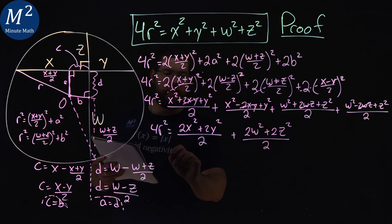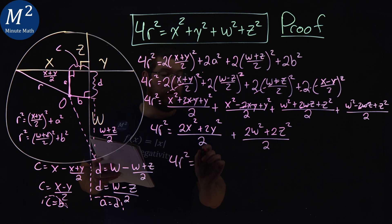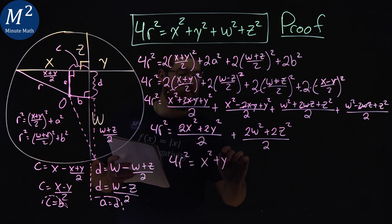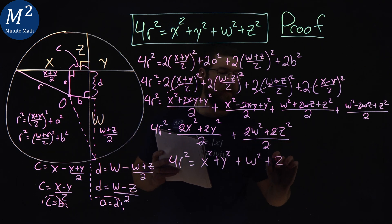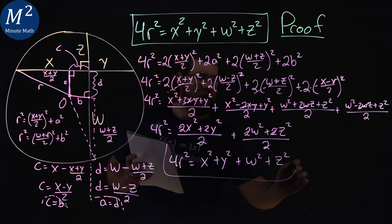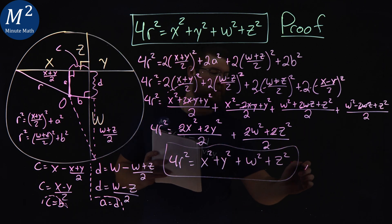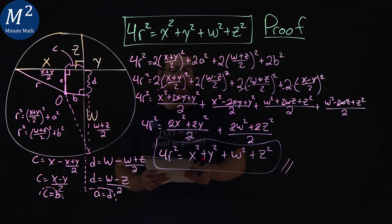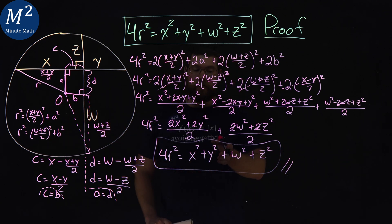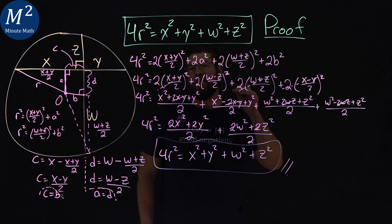z² + z² is 2z² over 2. Hopefully now you're seeing this, that 4r² equals, the 2s cancel out here, x² + y². 2s cancel out here again, w² + z². And there we have our wonderful proof. 4r² = x² + y² + w² + z².